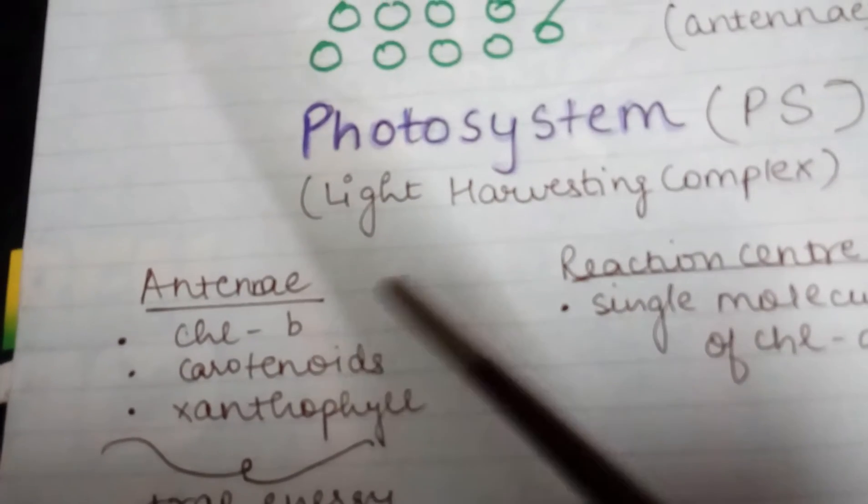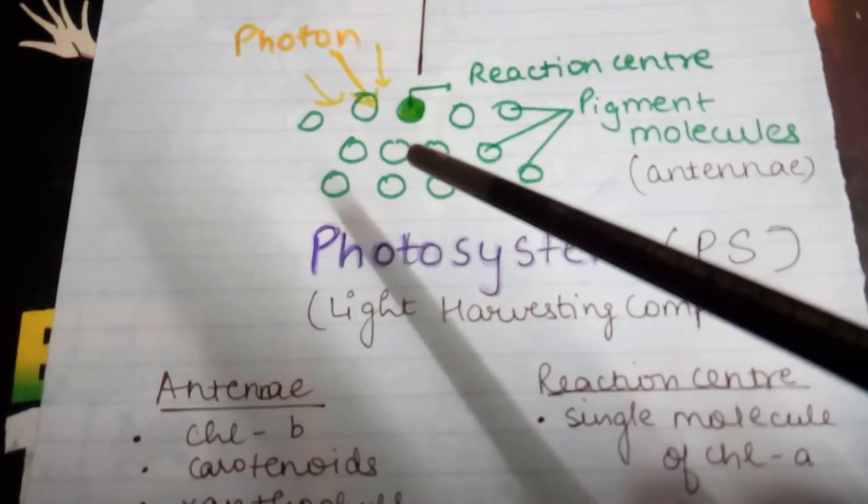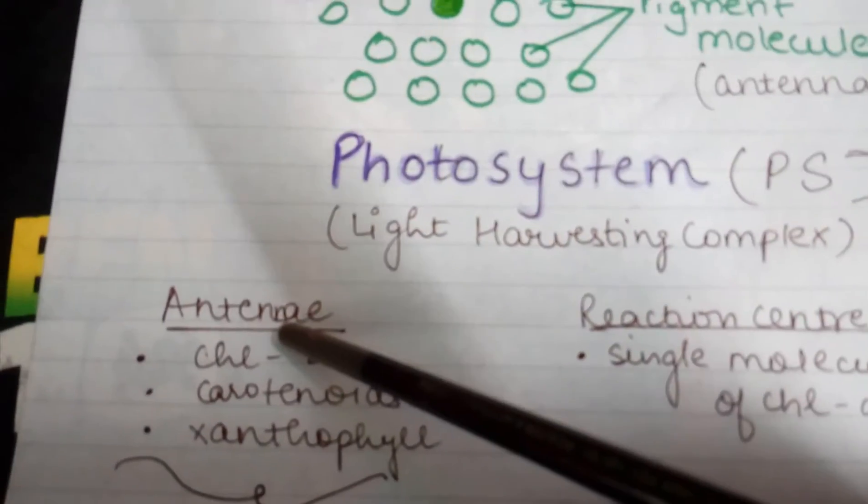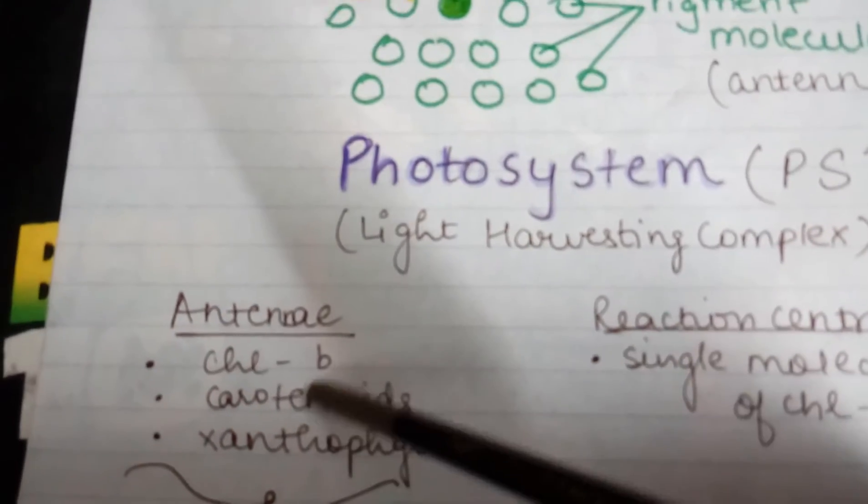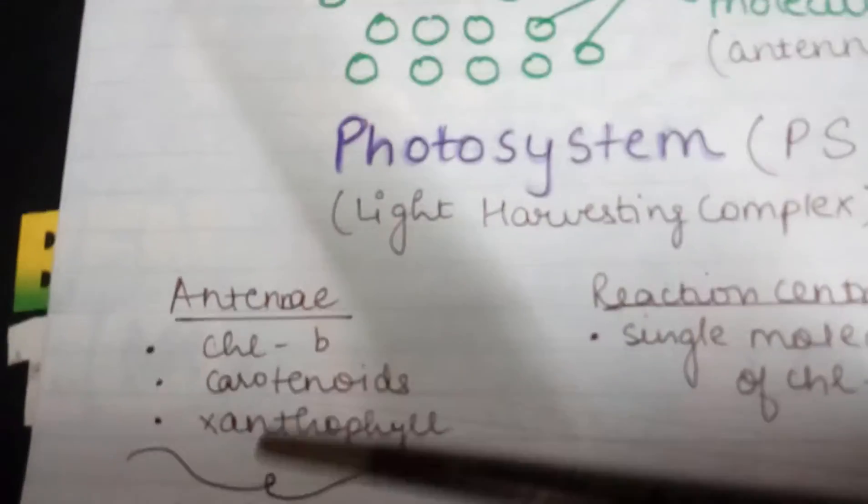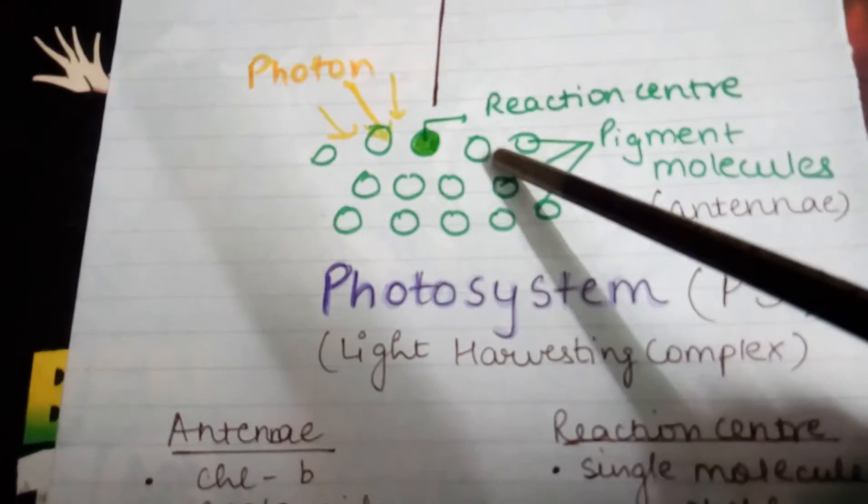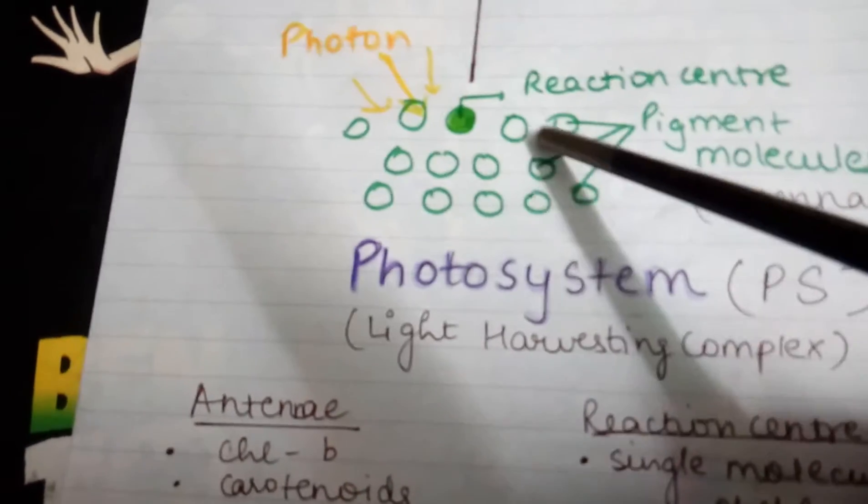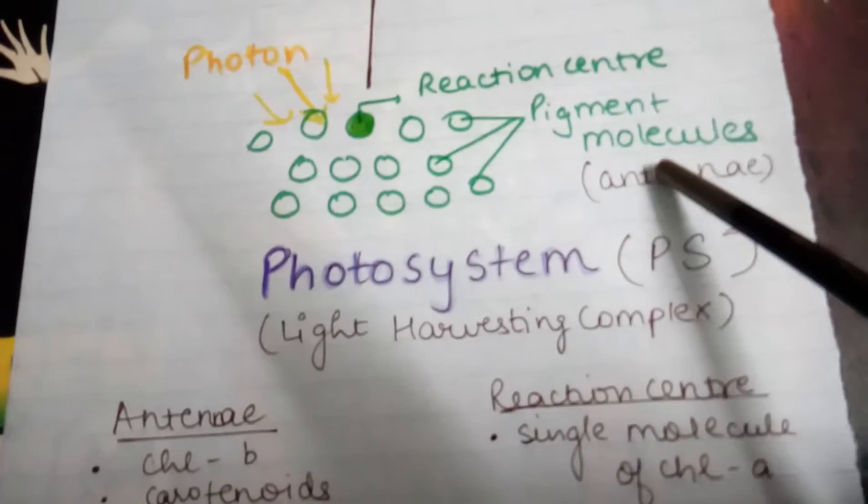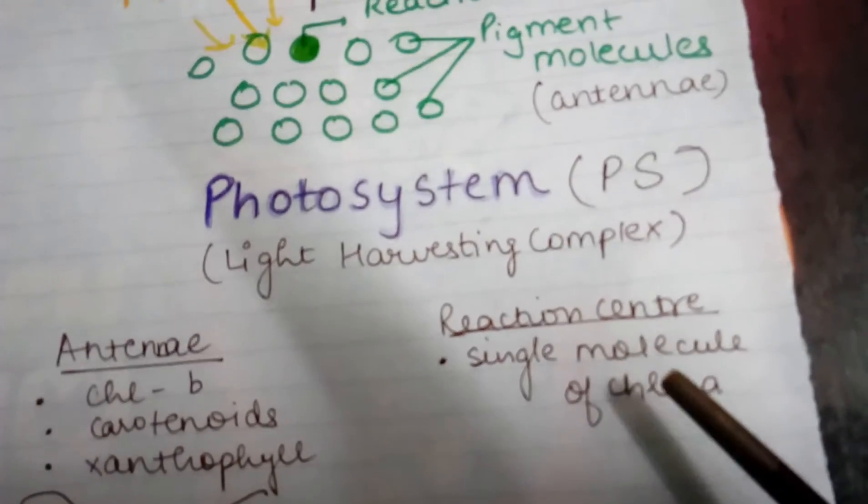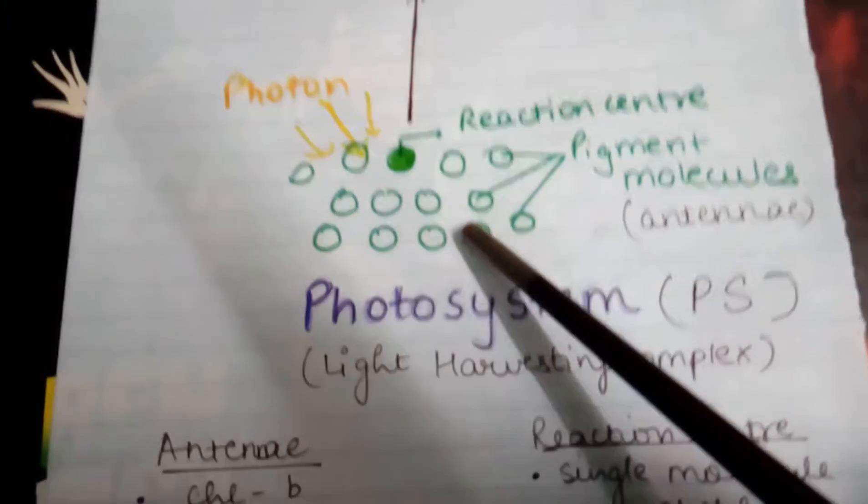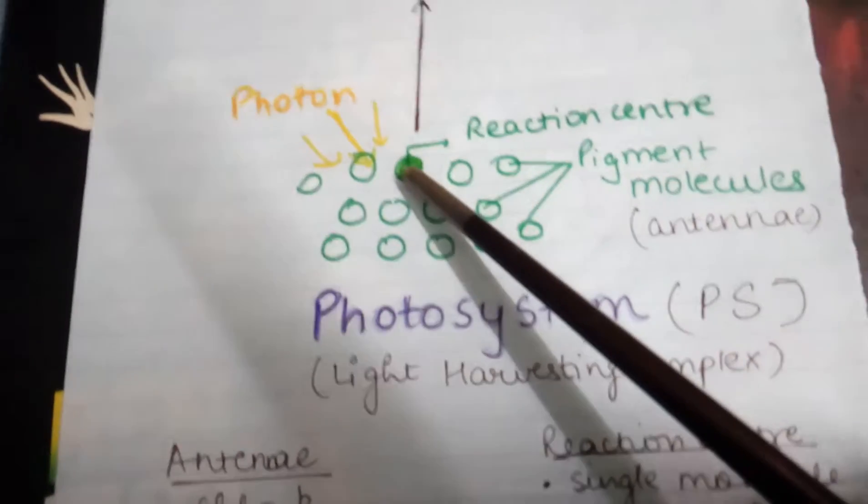How are these photosynthetic pigments arranged within a photosystem? The antennae constitutes many molecules of chlorophyll B, carotenoids, and xanthophyll. As you can see, these hollow circles I've drawn are the pigment molecules or the antennae. Next, there is a single molecule of chlorophyll A in every photosystem. You can see this one, and it's also called the reaction center.